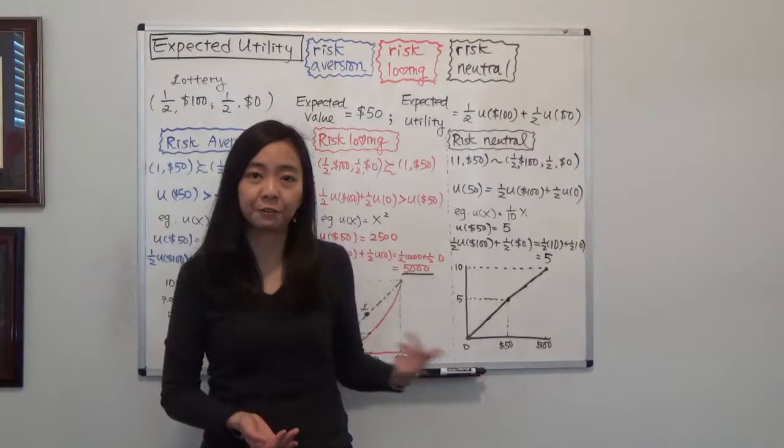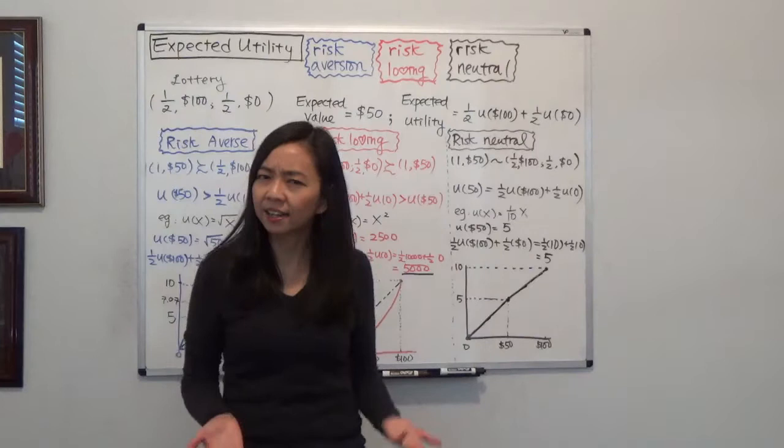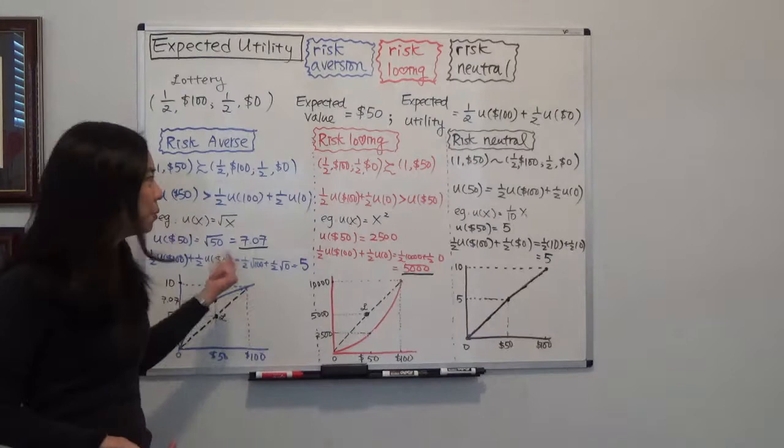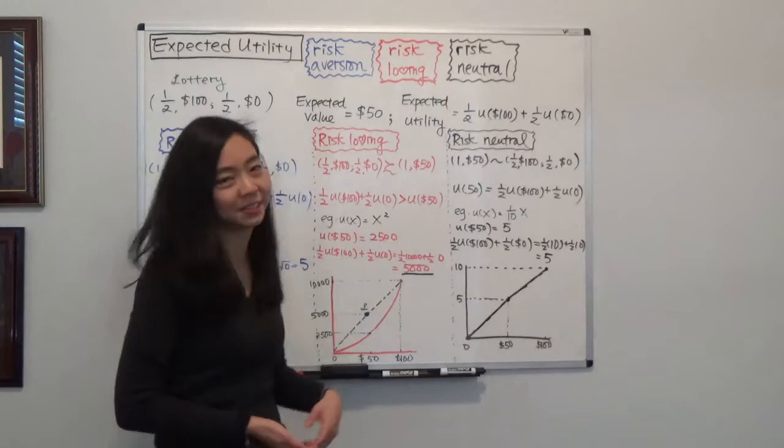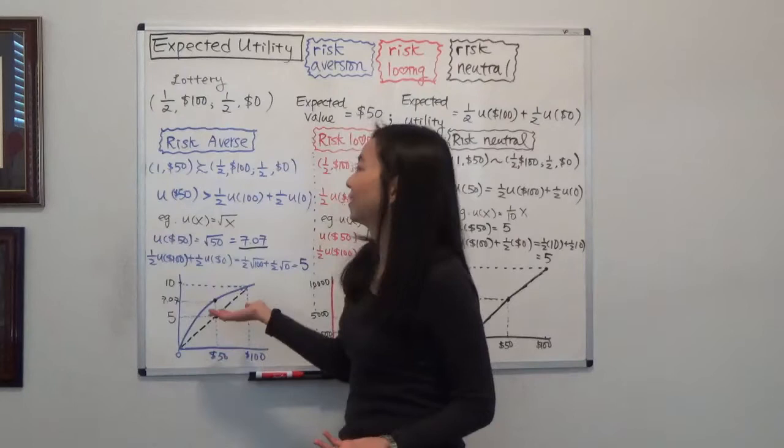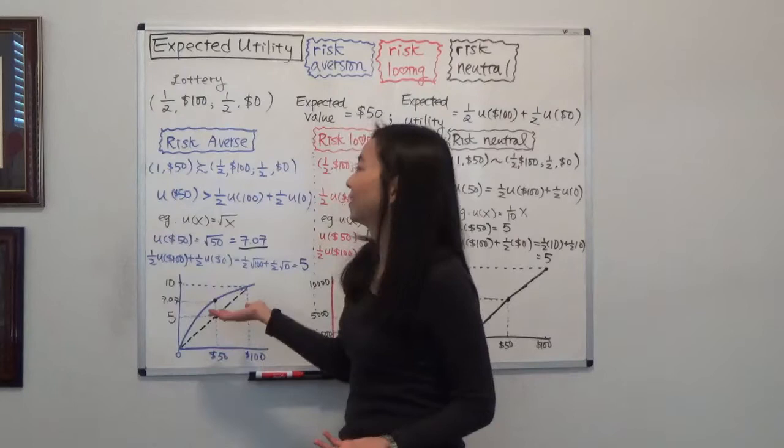You might ask: what exactly is our risk preference? Are we risk-loving or risk-averse? Well, you can be both at the same time. The fact that you buy a lottery shows you are risk-loving, but the fact that you buy insurance shows you are risk-averse. So you can be risk-averse and risk-loving simultaneously depending on the situation. I hope this helps, and I'll see you next time.